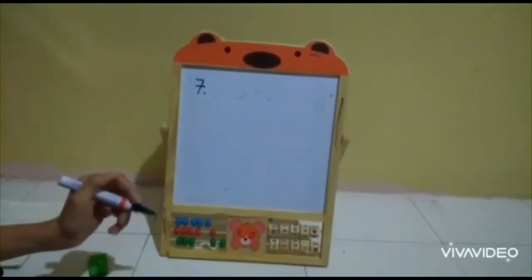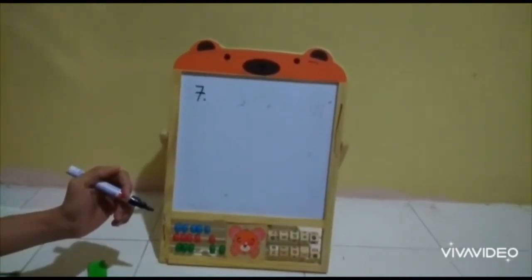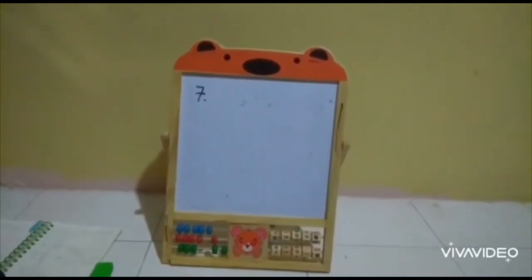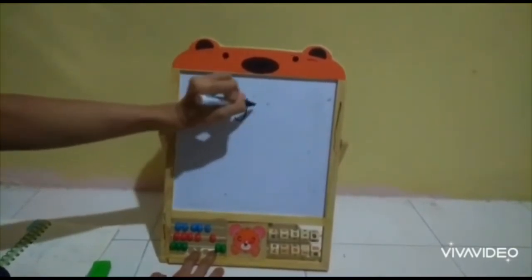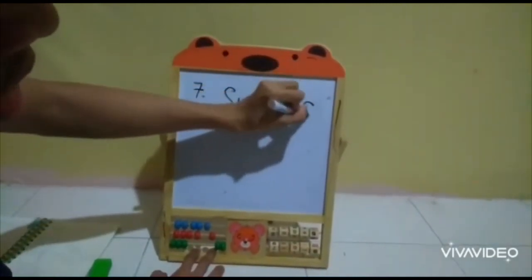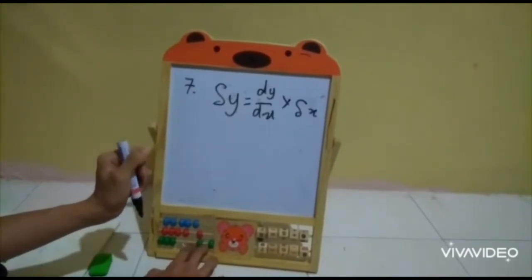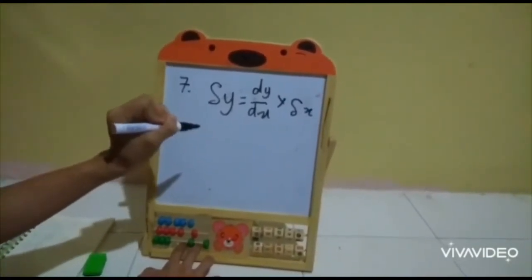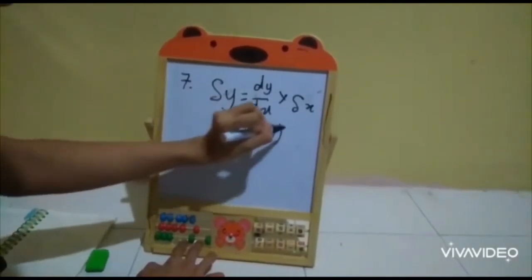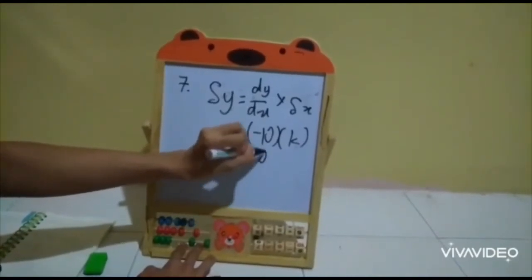For question 7b, express the approximate change in y in terms of k when x changes from 2 to 2 + k, where k is a very small value. Using the formula: delta y = dy/dx × delta x. The dy/dx value from the previous part at x = 2 is -10. Delta x = k. So delta y = -10 × k = -10k.